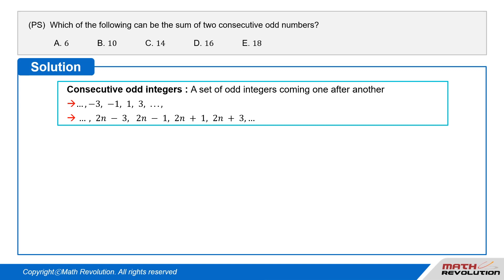Solution. Consecutive odd integers. Consecutive odd integers refer to a set of odd integers coming one after another. They can be written as, and so on,